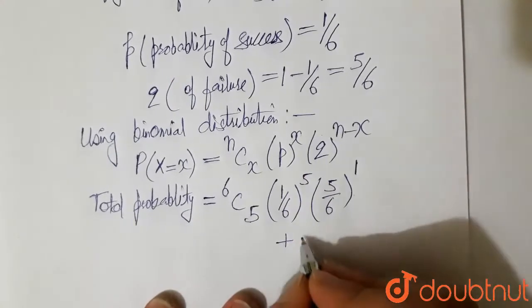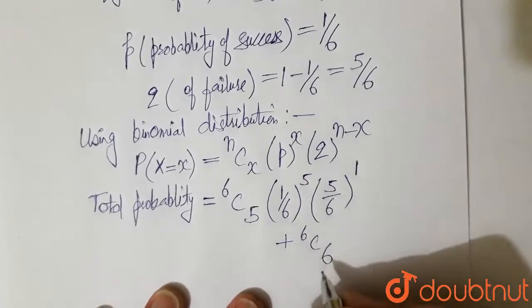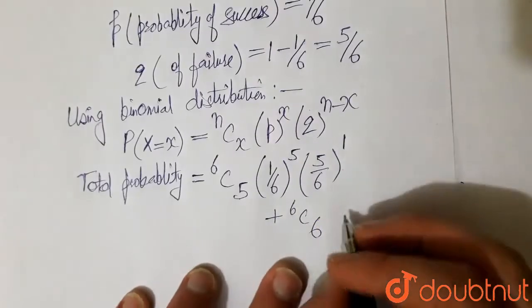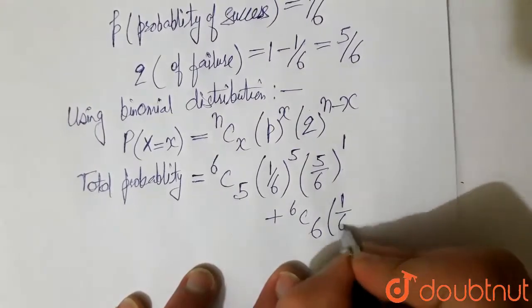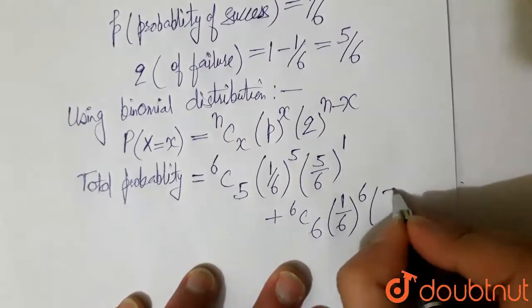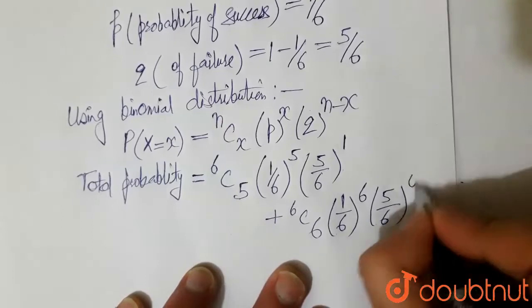And second case is probability of 6 successes. So 6C6, 1 by 6 to the power 6, and 5 by 6 to the power 6 minus 6 that is 0.